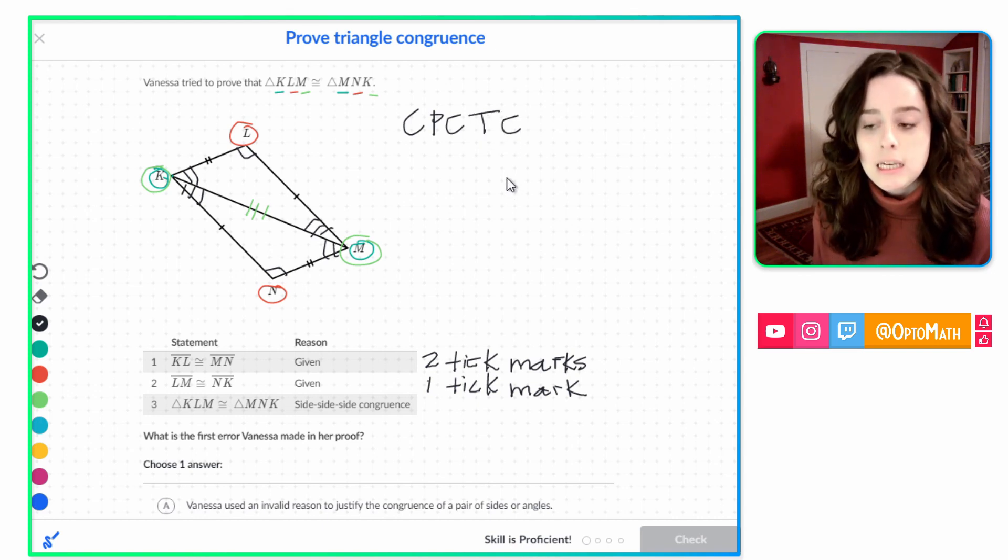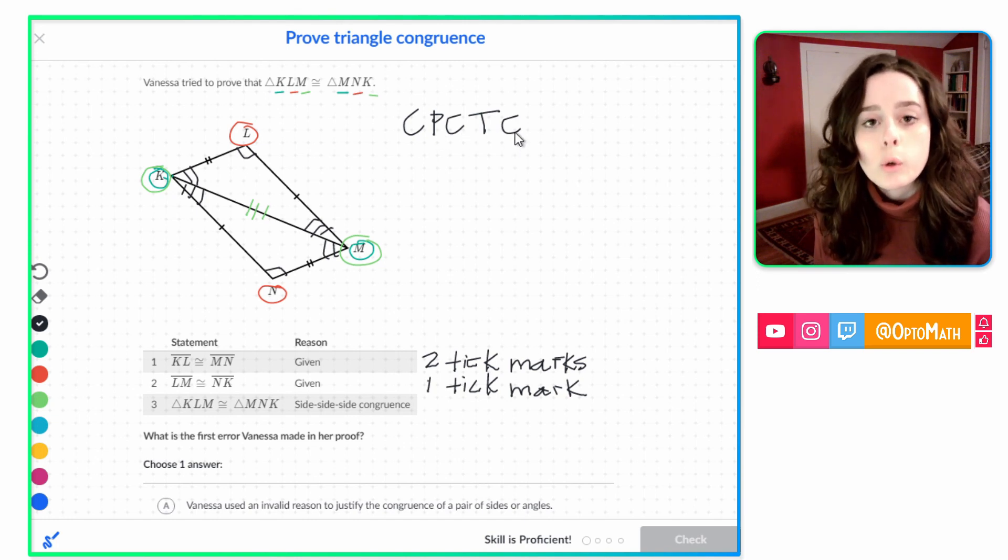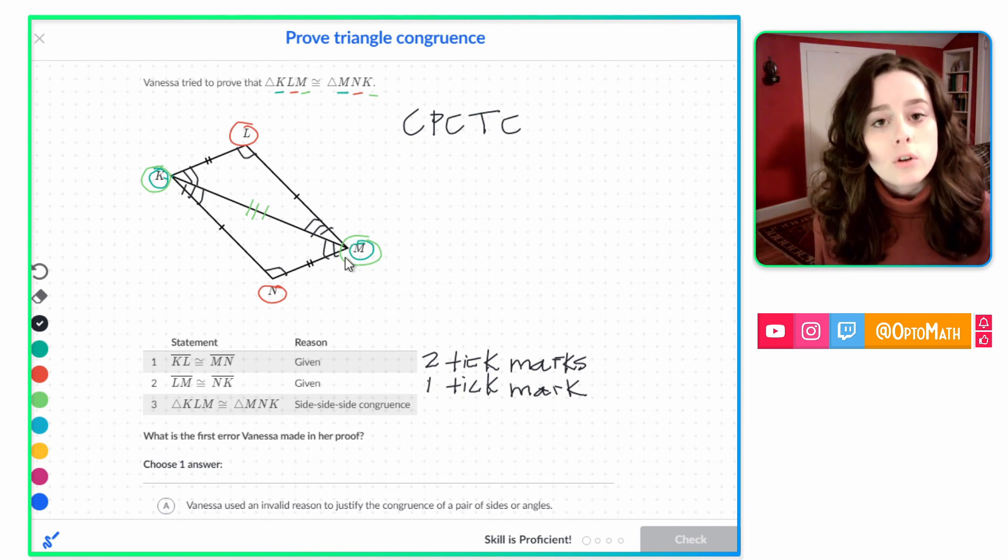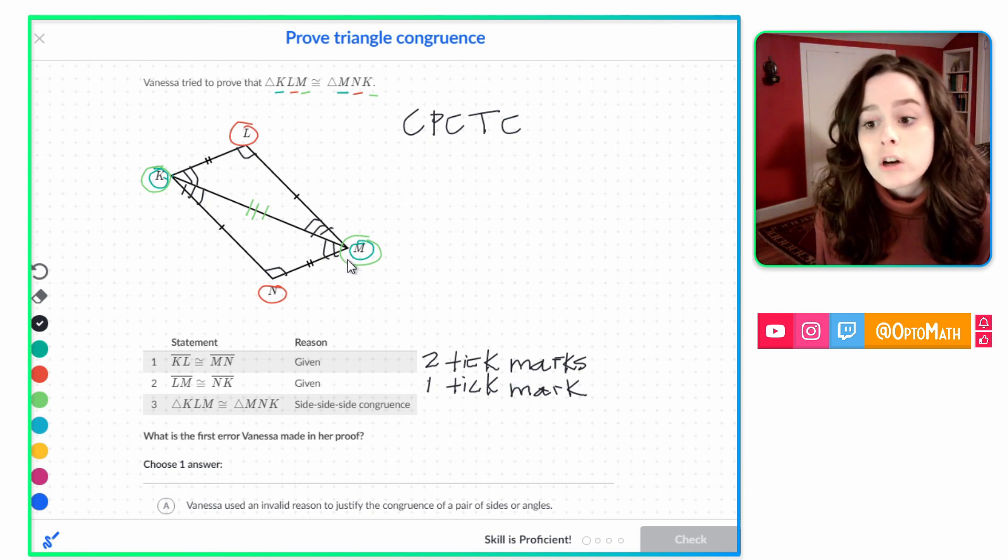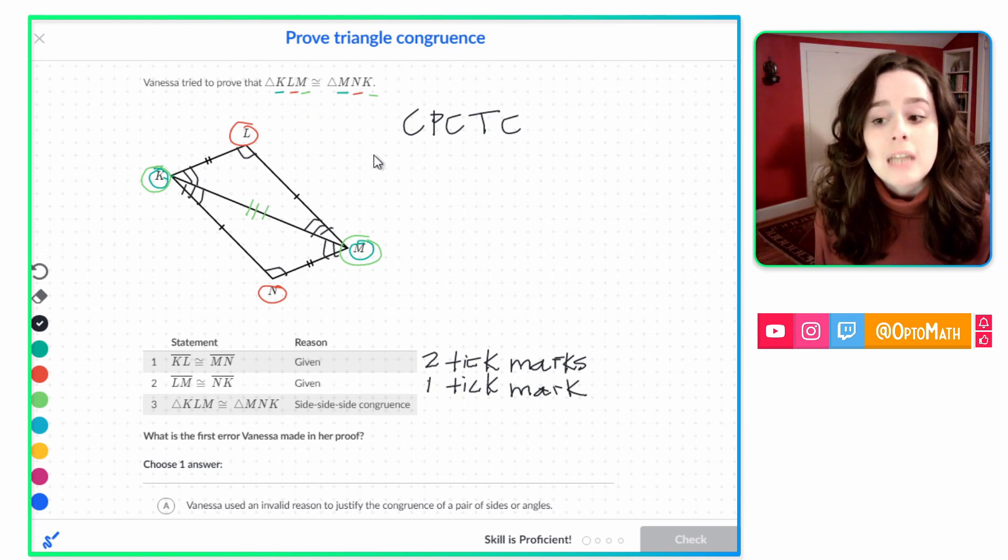And we know that corresponding parts of congruent triangles are congruent. CPCTC. Corresponding parts of congruent triangles are congruent. That means if we know two triangles are congruent, all their corresponding parts are congruent. And to figure out what parts are corresponding, we can look at our congruent statement.